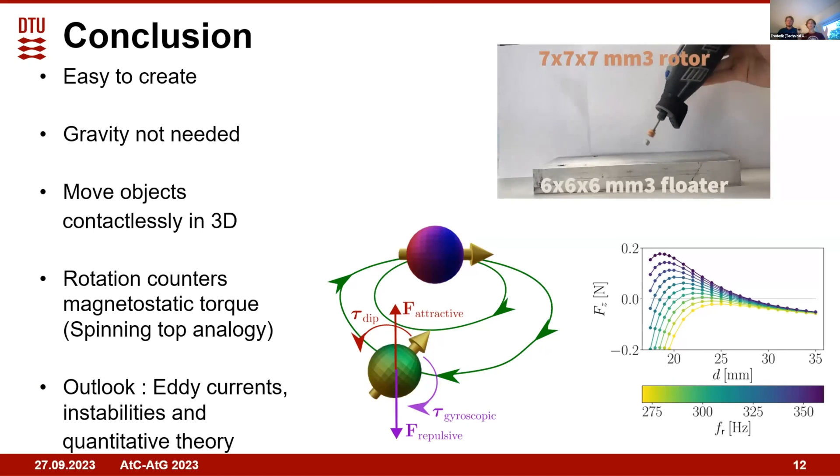Just to sum up the theory, the magnetostatic torque is counteracted by the rotation torque from the gyroscopic precession, analogous to a spinning top. For further improvements we need eddy currents and instabilities to maybe capture these up-down modes in our simulations, and we would like some more quantitative theory for predicting the curves and the parameter dependence. Thank you, and it's time for questions.